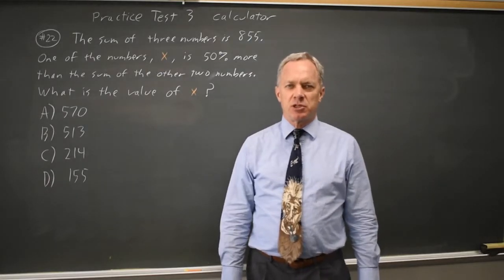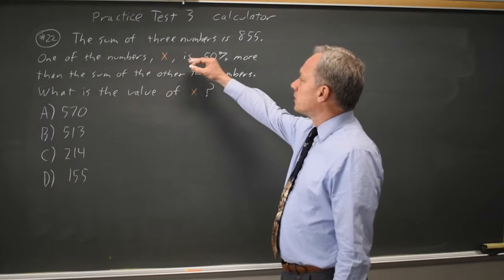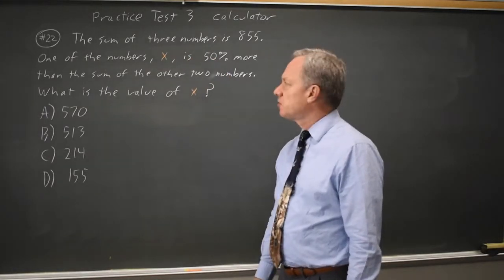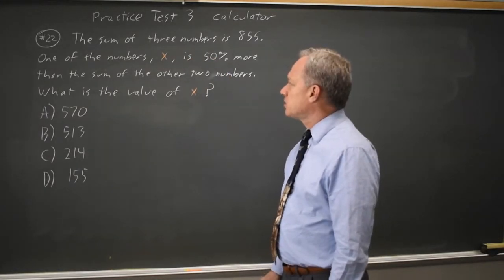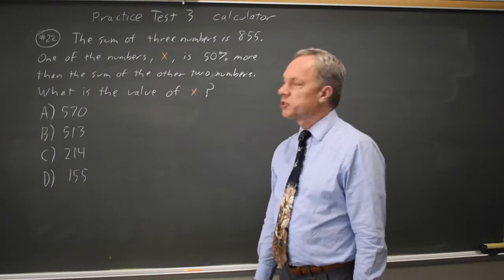This is calculator question number 22. The College Board describes three numbers whose sum is 855 and one number x is 50% more than the sum of the other two.